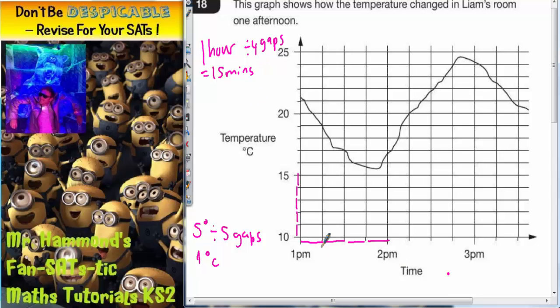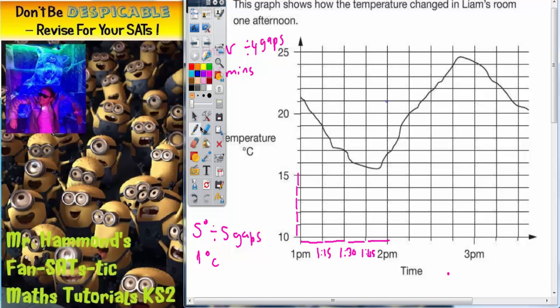So each gap must be worth 15 minutes. So the first gap would be 1:15, to the second gap 1:30, to the third gap 1:45, and then up to two o'clock.